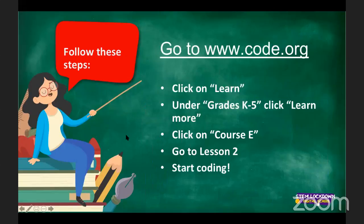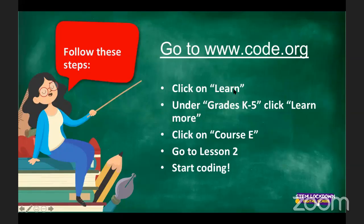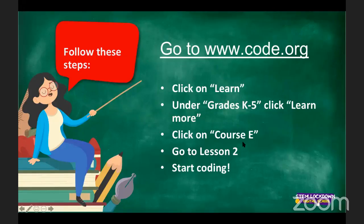When you go to code.org, I want you to follow these steps. On your top left of your screen, click on 'Learn.' When it loads, scroll down to Grades K to 5 and click 'Learn More.' You'll see different blue boxes — one for K to 5, one for 6 to 12, etc. Click on the first one (K to 5), then click 'Learn More,' then click Course E, go straight to Lesson 2, and start coding.